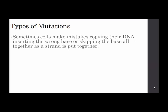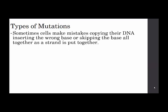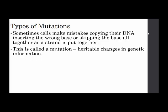There are certain types of mutations, and sometimes cells make mistakes copying their DNA — inserting the wrong base, or skipping the base altogether as a strand is put together. When we say 'base,' we're talking about those nucleotides, those letters: the A, C, G, T in DNA, or A, C, G, U in RNA. This is called a mutation — a heritable change in genetic information.